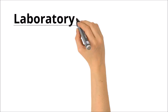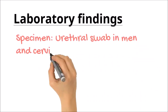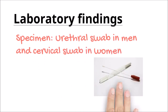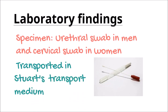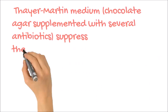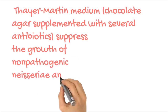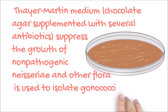We will be discussing the laboratory diagnosis of gonococcus. Specimens collected are the urethral swab or the cervical swab, and they are transported in Stuart's transport medium or Amies transport medium. Thayer-Martin medium is a modified chocolate agar supplemented with antibiotics. It suppresses the growth of non-pathogenic Neisseria and other flora and is used to cultivate pathogenic gonococcus specifically.